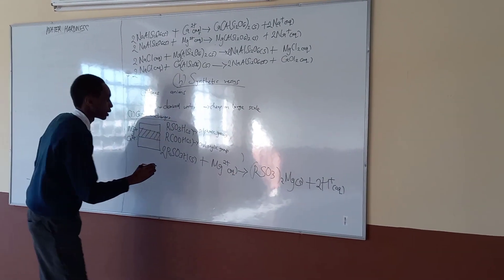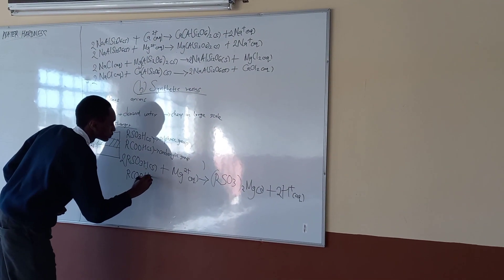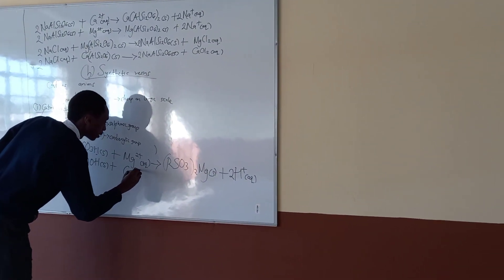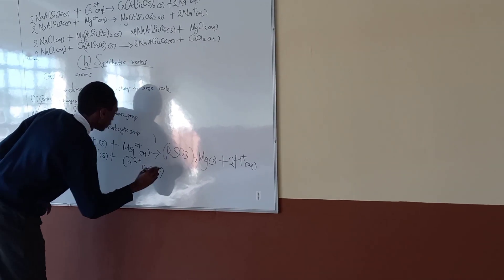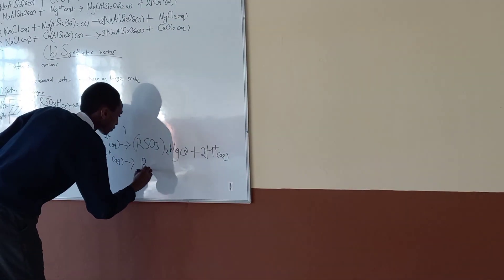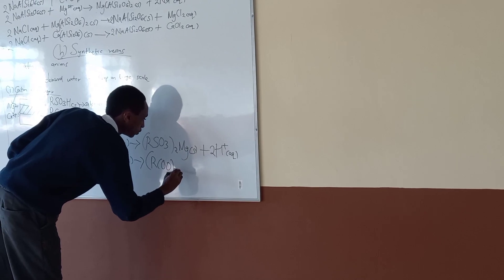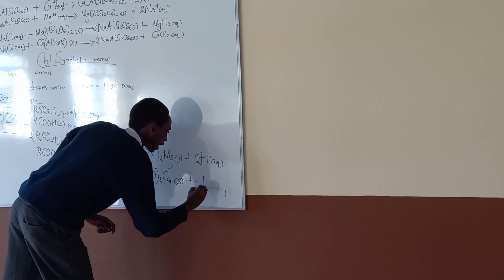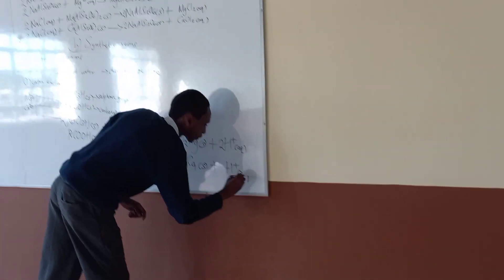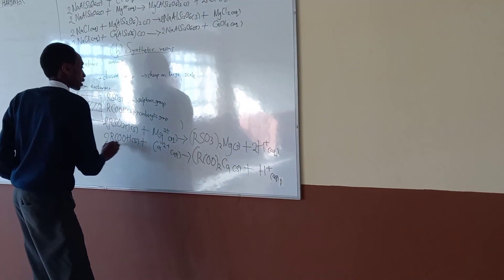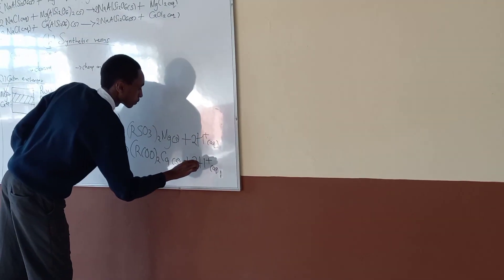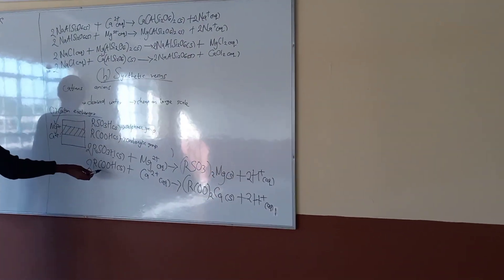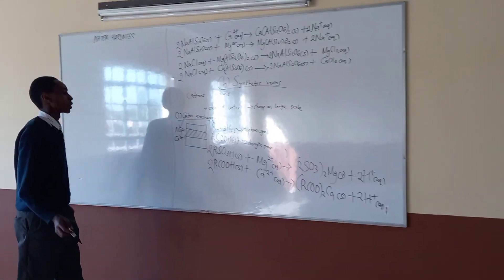Let's go to the carboxylic group. RCOOH solid plus calcium ions aqueous. We'll get to form (RCOO)2Ca solid plus 2 hydrogen ions aqueous. So we get to balance by bringing a two here and a two here. So that is how simply the cations are removed, either by using the carboxylic group or the sulfonic group.